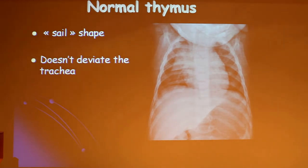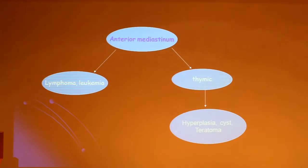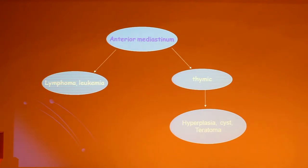Don't forget this aspect — the size and shape. This is the normal thymus. It never deviates the trachea. So when we have a mass of the anterior mediastinum, it could be a large thymic mass.